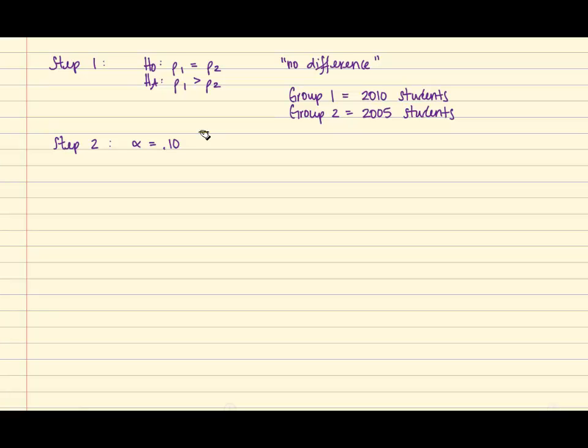Therefore, the sample proportion for group 1 is .30 and the sample proportion for group 2 is .25. In order to use the formula for the test statistic, we will also need to determine x1 and x2 since only the sample proportions are provided.